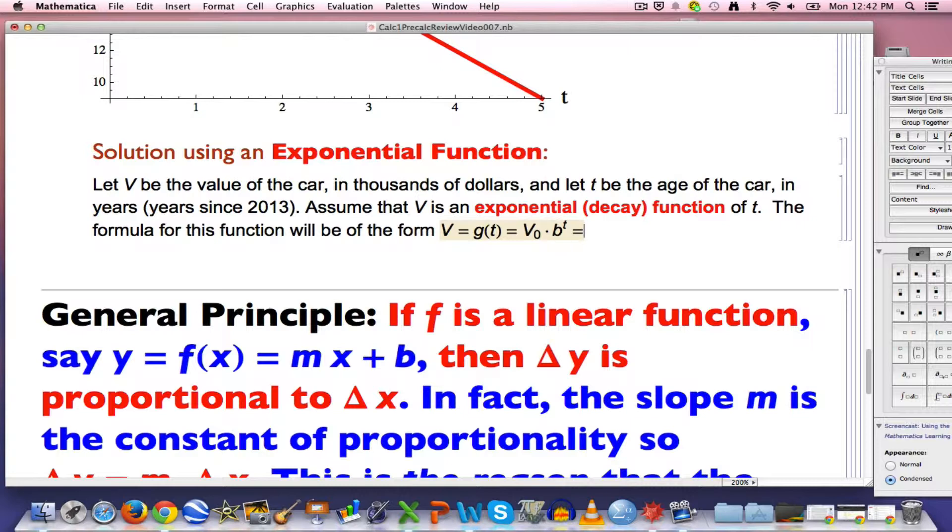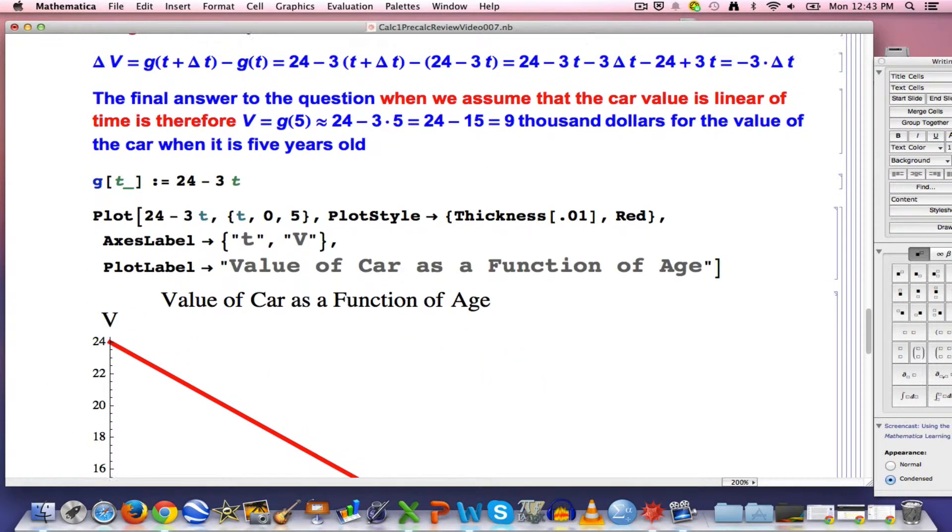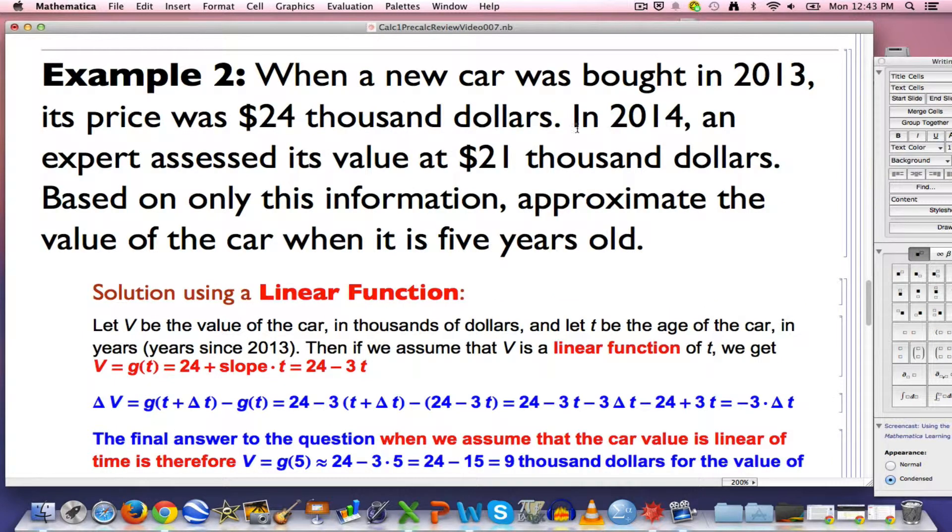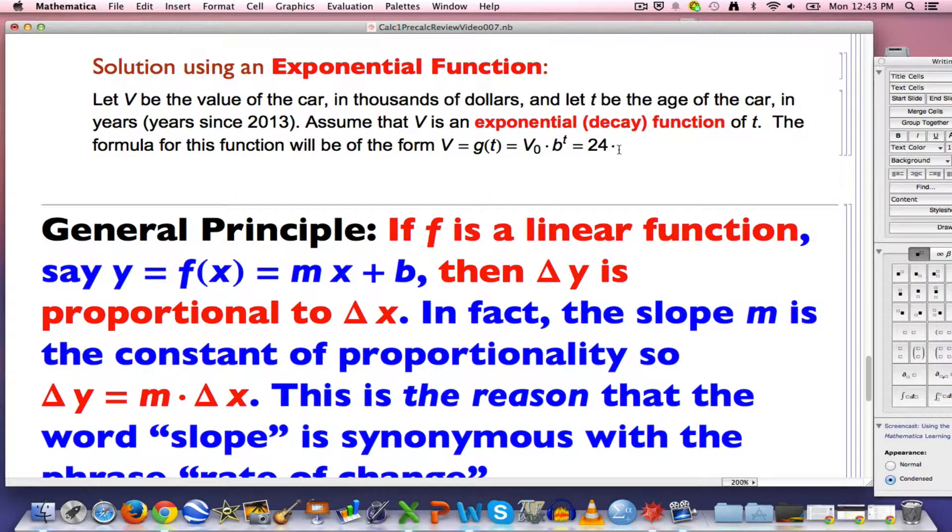We can start typing in numbers here. v naught, the initial value is $24,000. What is b? This step right here for this problem is what's a little bit easier in this one compared to the population growth one. Because we are thinking about knowing the value one year in the future, what we can do is say, as a percentage, what is $21,000 as a percentage of $24,000? What percent is 21 of 24? As a fraction, it's 21 over 24, or 7 eighths. As a decimal, that would be 0.875. That is the value of b.